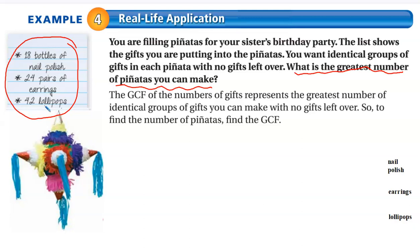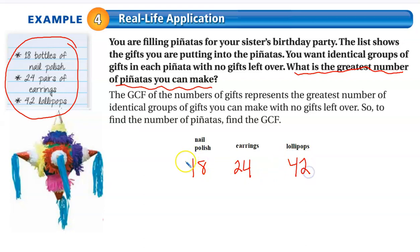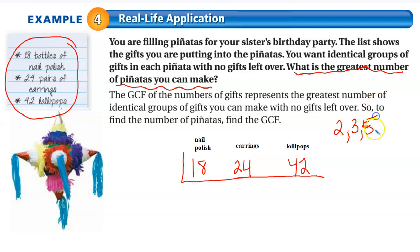So I can really use the idea of the factor ladder. I'm going to make a little factor ladder with my nail polish, my earrings, and my lollipops as the numbers in my ladder. I have 18 bottles of polish, 24 pairs of earrings, and 42 lollipops. I don't want to have any leftovers, so I'm just going to put 2, 3, 5, 7 as the first four prime numbers.